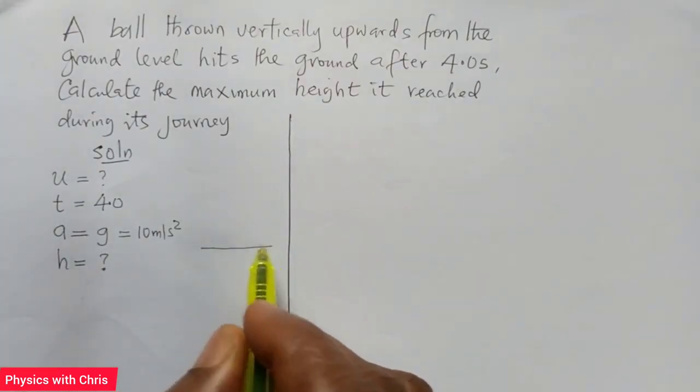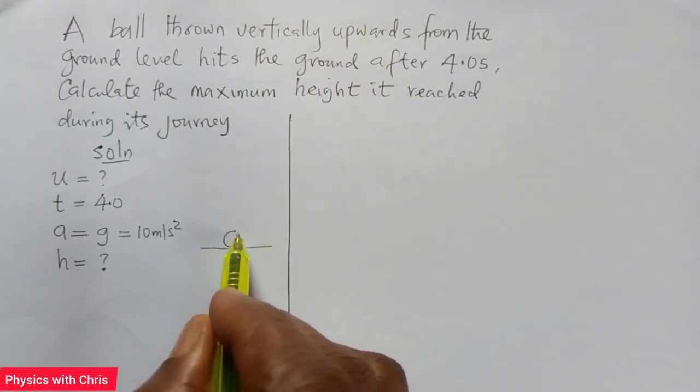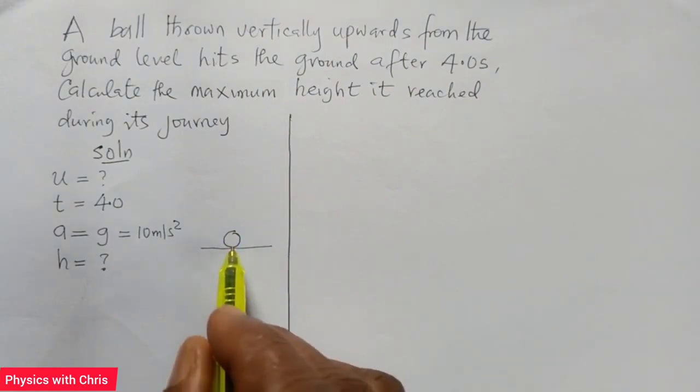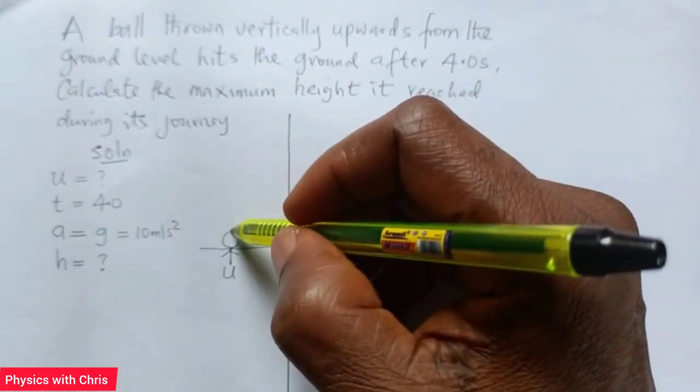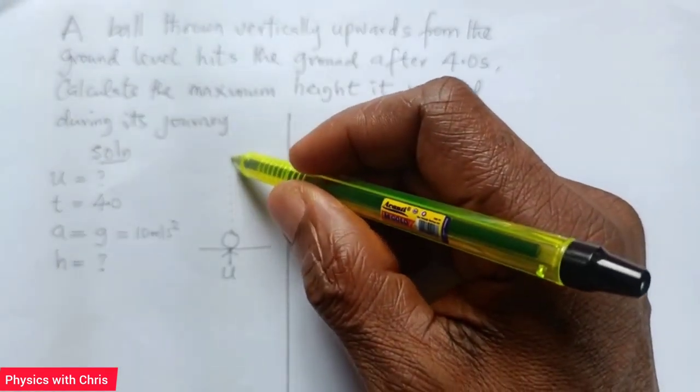Let's see, this is the ground level. Here we have the ball projected from this level with the initial velocity U. Of course you understand the motion of this ball. It's going to rise in this direction.